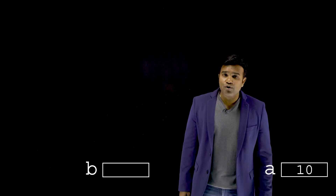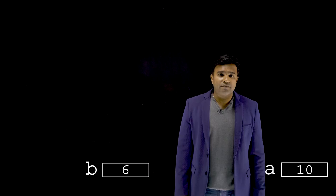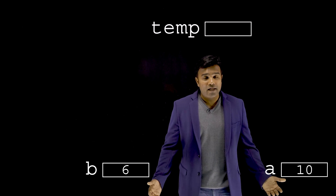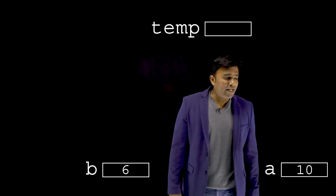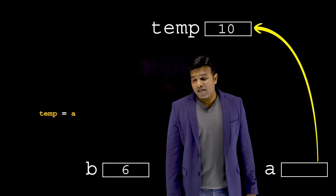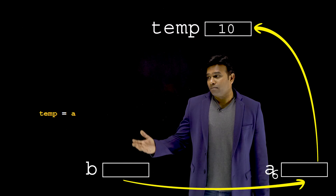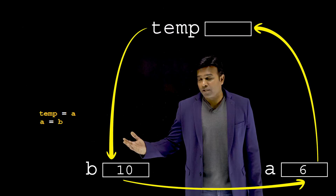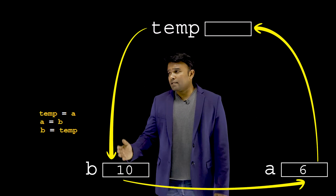Let me begin by explaining the simplest possible swap logic. I would consider a variable 'a' with a value 10, and another variable 'b' with a value 6. I would like to swap them. For that, I will make use of a third variable called 'temp'. Whatever is in 'a', I send it to temp. Whatever is in 'b', I give it to 'a'. Then whatever is in temp, I give it to 'b'. This is the simplest logic to swap two numbers.